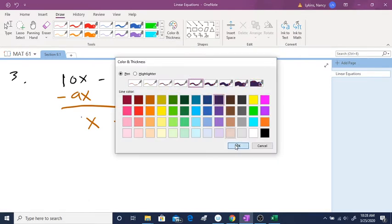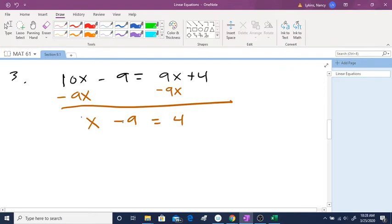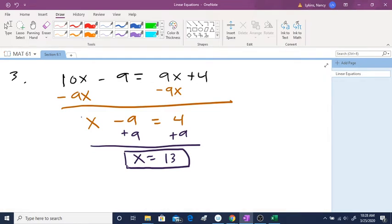One more step I need to do is I need to have this minus 9 move it over to the 4 by adding it, so they cancel each other out. Then I'm going to say x equals 4 plus 9 equals 13. If you go ahead and put this in your equation, you should get, if you put 13 in for x, you should get 121 equals 121.